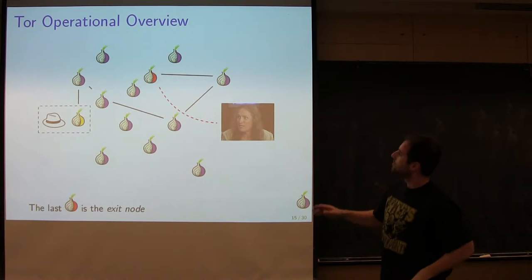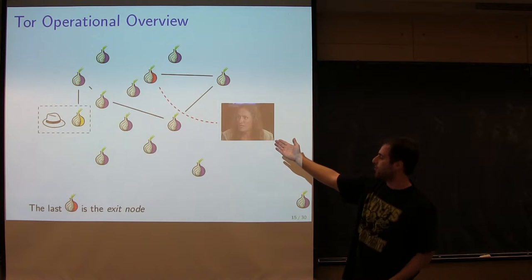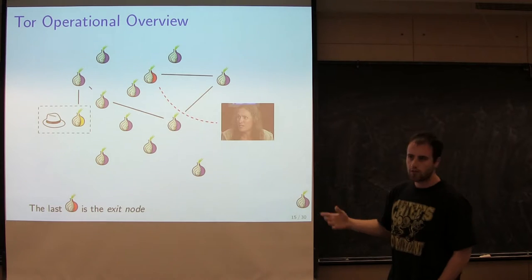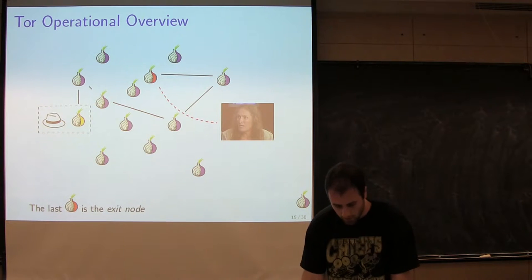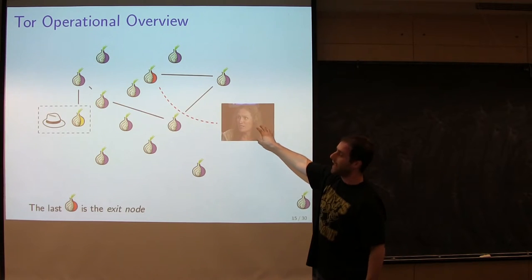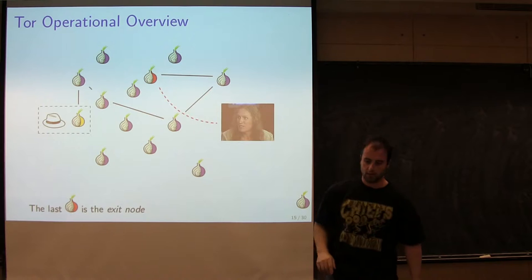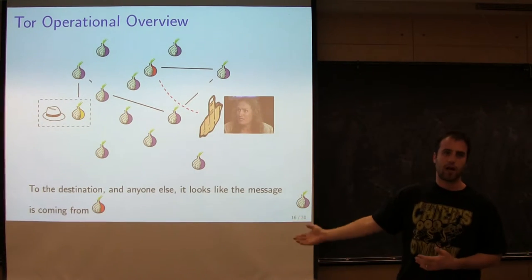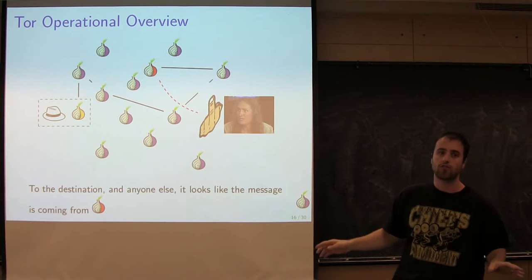The last router in the network becomes the exit node. Any router could be the exit node — it's your choice. Once you have your complete circuit set up, your destination and the rest of the world sees traffic as just coming from that last exit node. So you can send your message anonymously; anybody looking at the network cannot tell that you sent it.